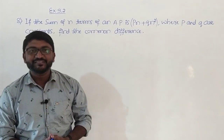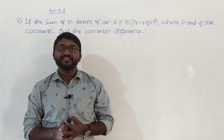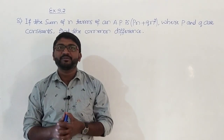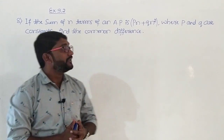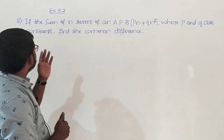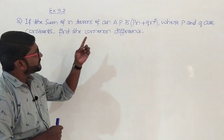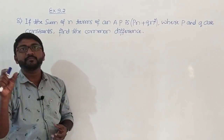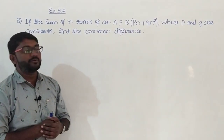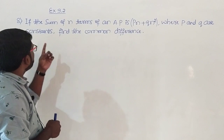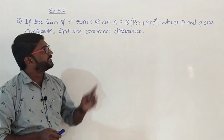Good afternoon students, welcome back to online mathematics class. In the last class we solved up to the seventh problem, so let us continue with the eighth one. The question is: if the sum of n terms of an AP is pn plus qn square, where p and q are constants, find the common difference.